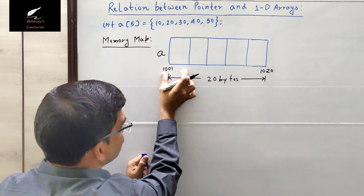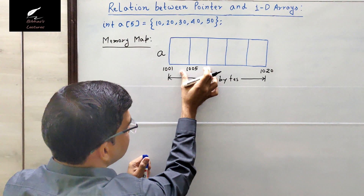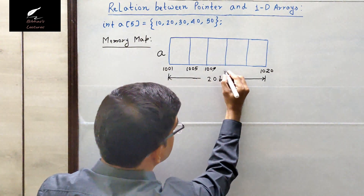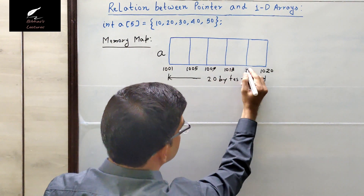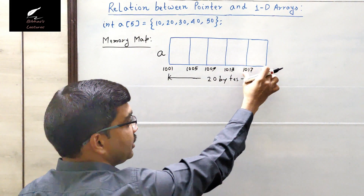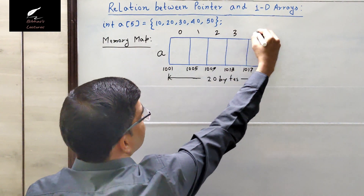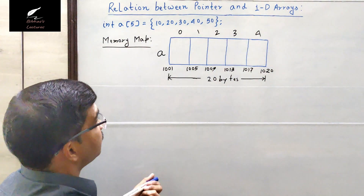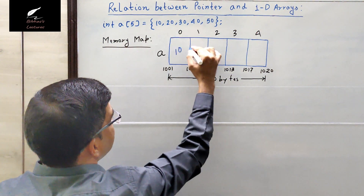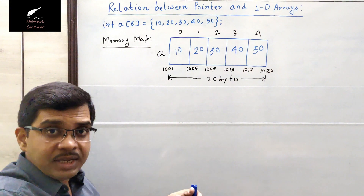The first four bytes, 1001 to 1004, are reserved for the first element. Then 1005 to 1008 for the second element, 1009 to 1012 for the third, 1013 to 1016 for the fourth, and 1017 to 1020 for the last element. Array indices always start from 0, so the last index is 4, and the elements are 10, 20, 30, 40, and 50.